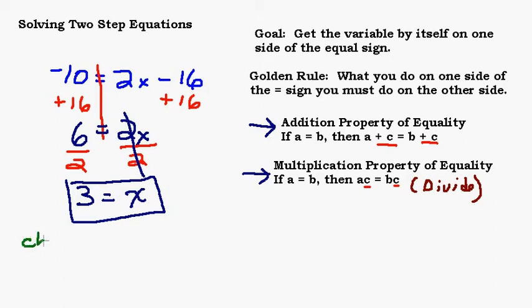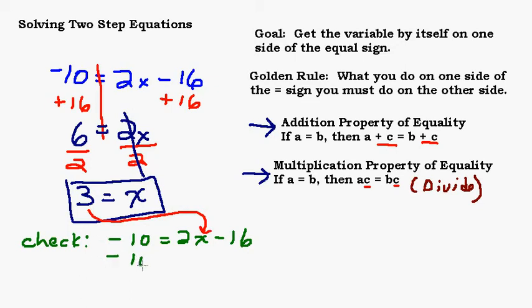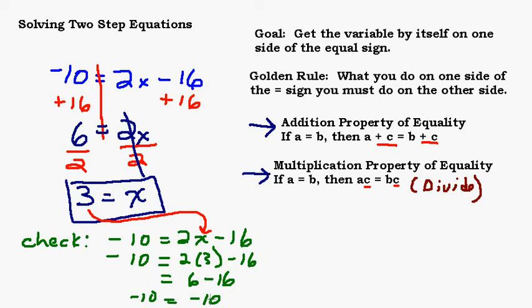Let's check it. Take your original equation — negative 10 equals 2x minus 16 — and plug your answer in for X. I'll plug in 3: negative 10 equals 2 times 3 minus 16. Simplifying: 2 times 3 is 6, take away 16 is negative 10. So I end up with negative 10 equals negative 10. The left-hand side equals the right-hand side when X equals 3, so that is the solution.